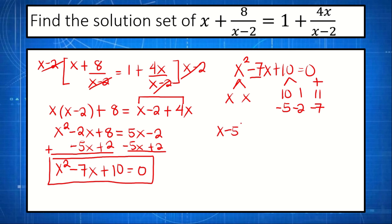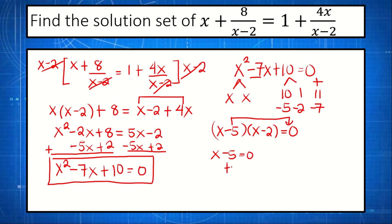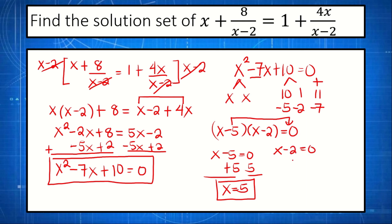The factored form of x squared minus 7x plus 10 is x minus 5 multiplied by x minus 2, equals 0. Applying the zero product property: x minus 5 equals 0 gives x equals positive 5. The other factor: x minus 2 equals 0 gives x equals positive 2. These are the roots of x squared minus 7x plus 10 equals 0.